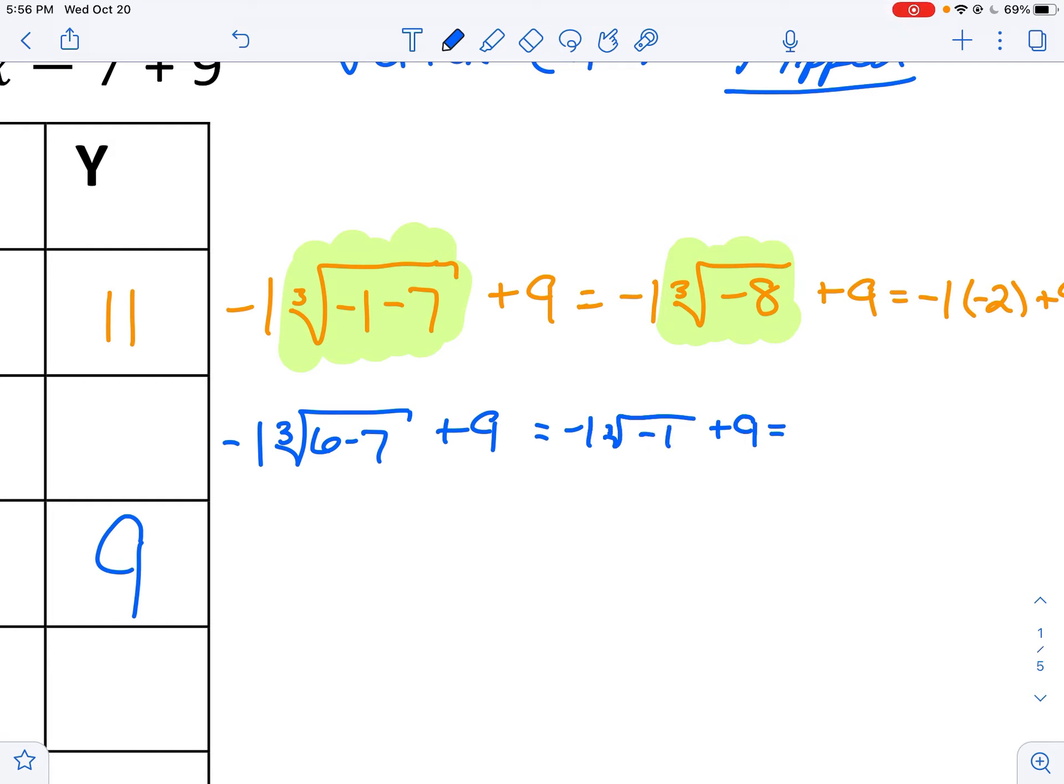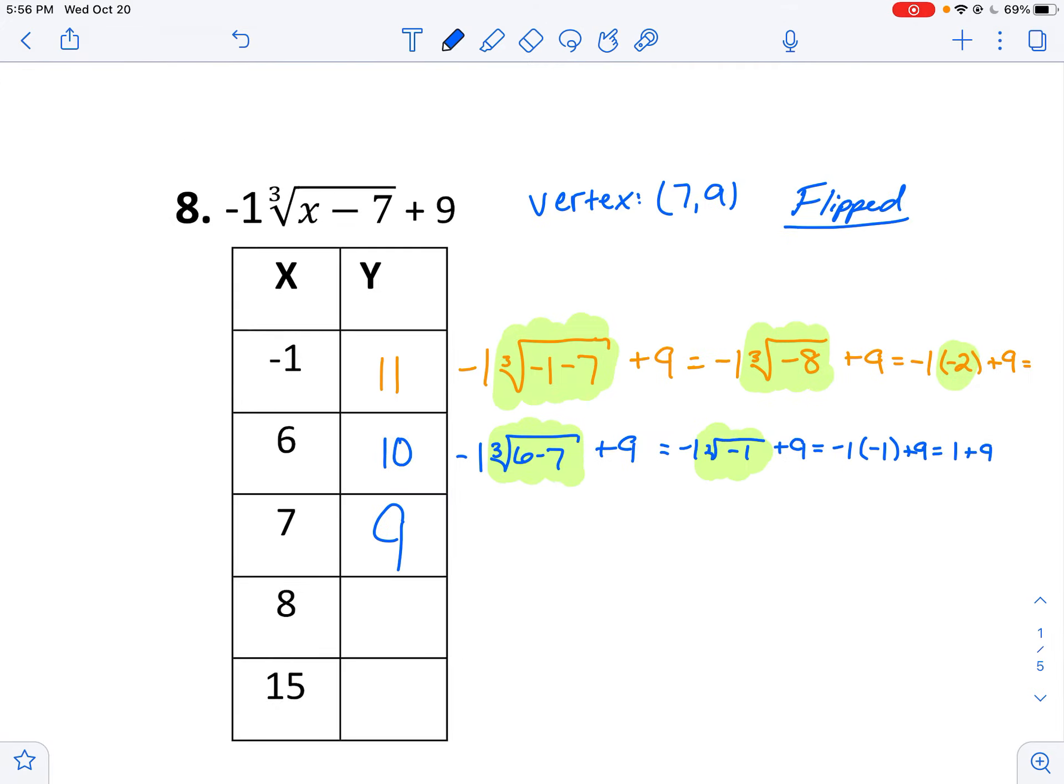Okay. So that will be a negative 1. So I'll keep the negative 1 out front. This cube root simplifies to cube root of negative 1 is negative 1. Negative 1 times negative 1 is 1. Plus 9 is 10.